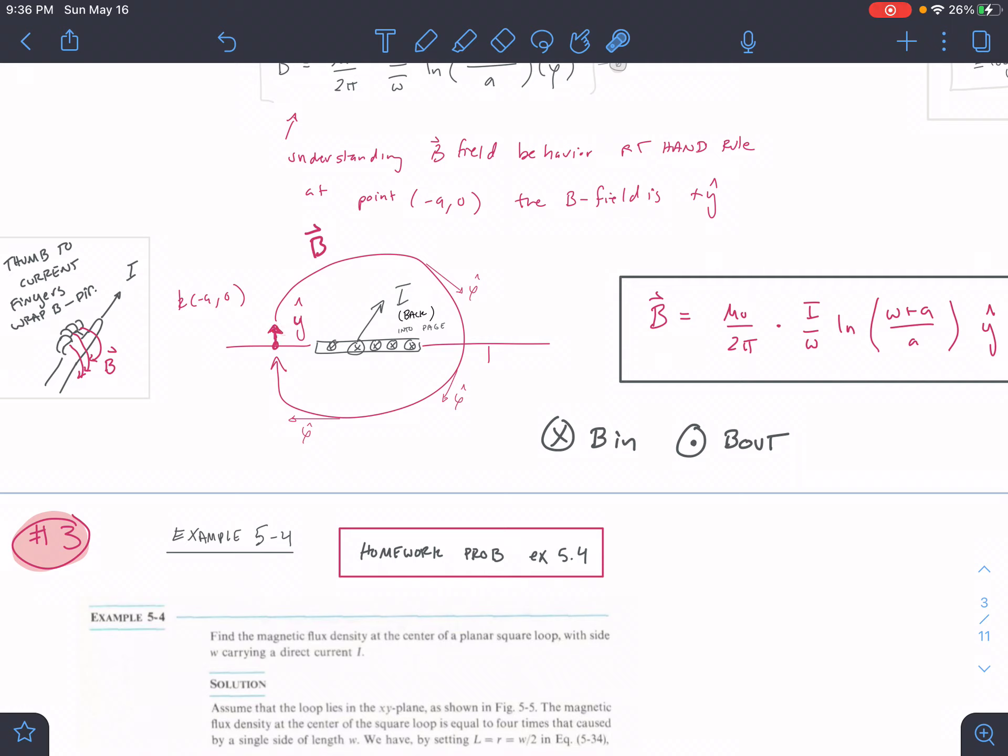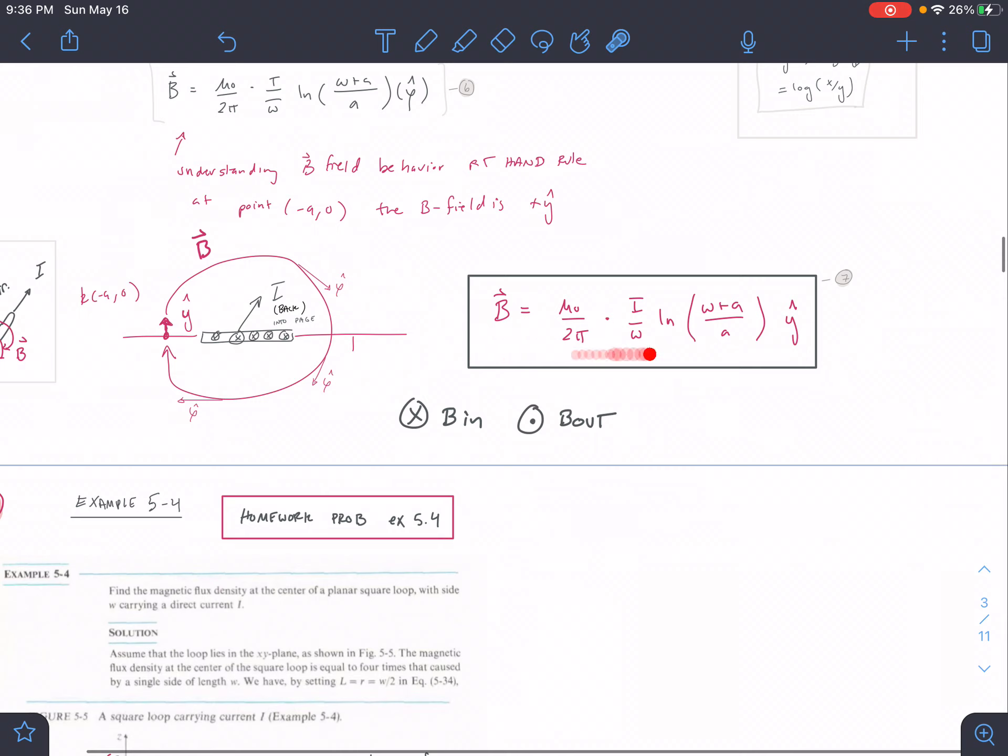If we're here our B field is going to be acting in a positive y direction. If we were here our B field would be acting in the negative y direction. So over here positive y. We have our full solution here, and that's why we put positive y right here for our final B field direction.